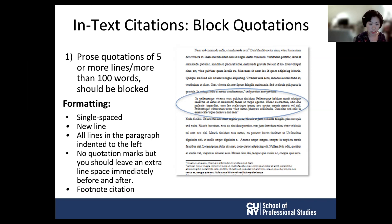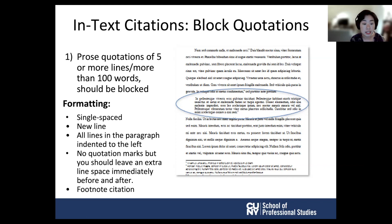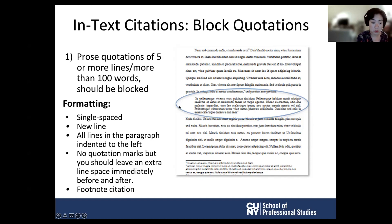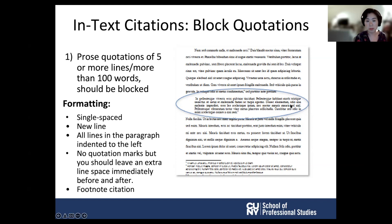Purdue OWL and the Chicago Manual of Style state that a prose quotation of five or more lines should be presented as a block quotation. A block quotation is single-spaced and takes no quotation marks, but you should leave an extra line space immediately before and after the quotation. The entire block quotation is indented — not just the first line — in the same way that you would start a new paragraph. The block quotation may be preceded with a period rather than a colon, meaning the introducing sentence does not need a colon before it.